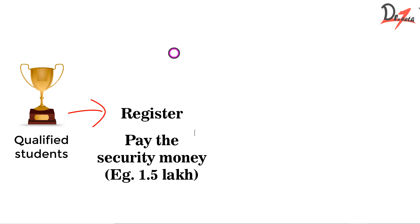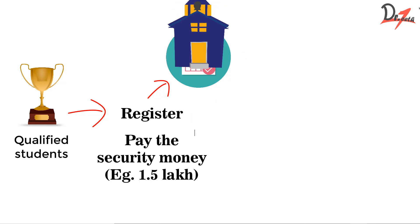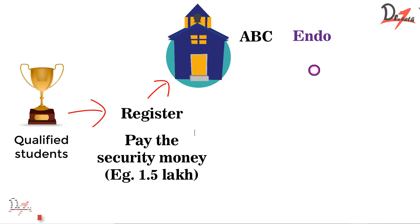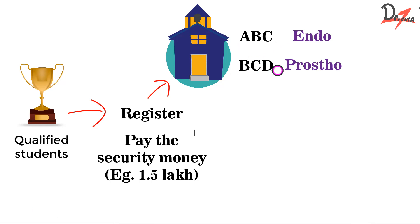Once you have paid the security money, they will tell you a date for locking your college. This locking is also online. You log in to the website and select your colleges. For example, college ABC with the department of endodontics as first preference, and college BCD with prosthodontics as second preference. Similarly you can put 10 or 20 different college preferences. The first preference is what you want the most and the last is what you want the least.